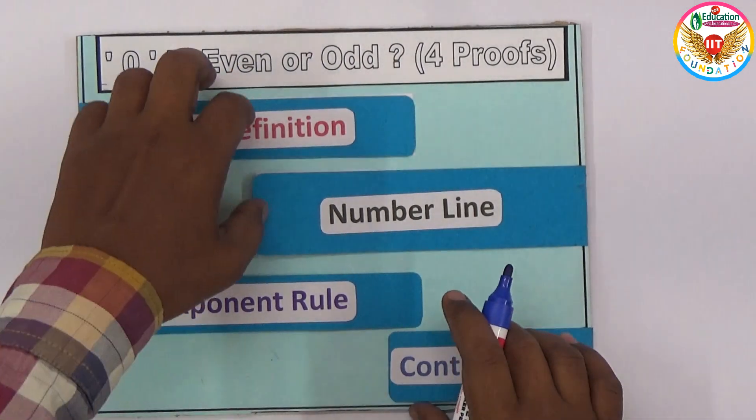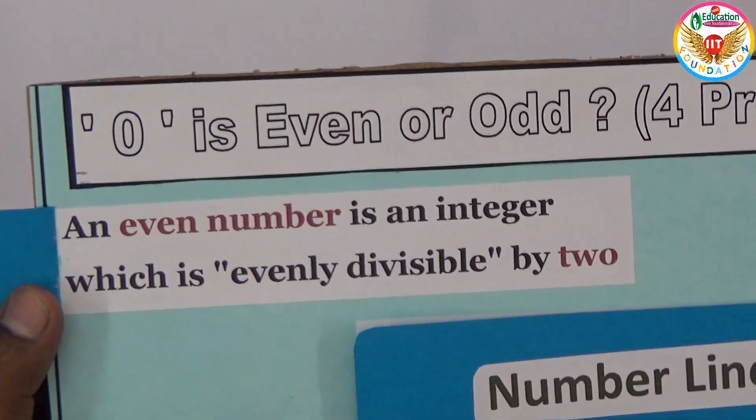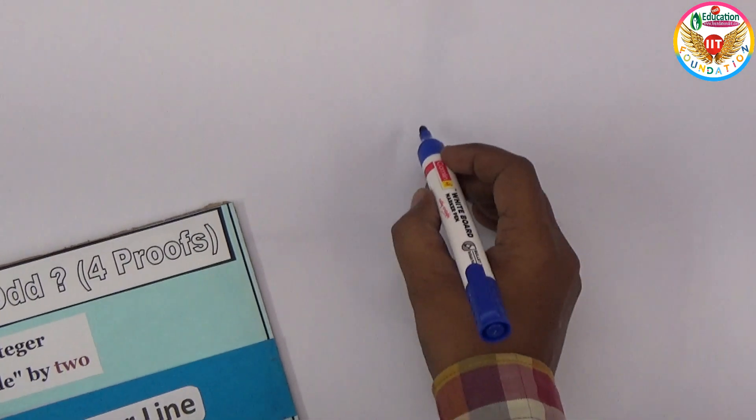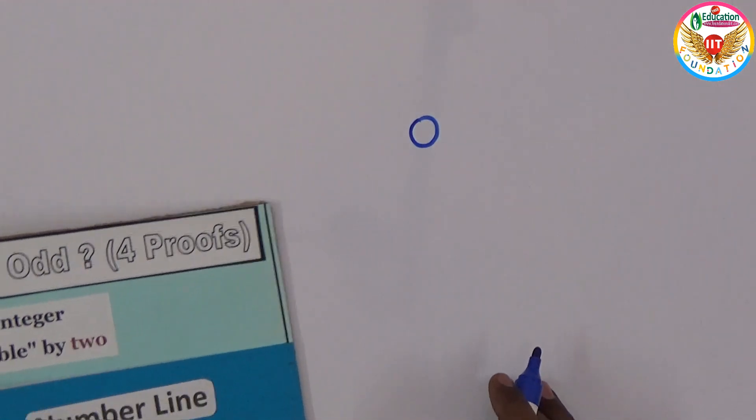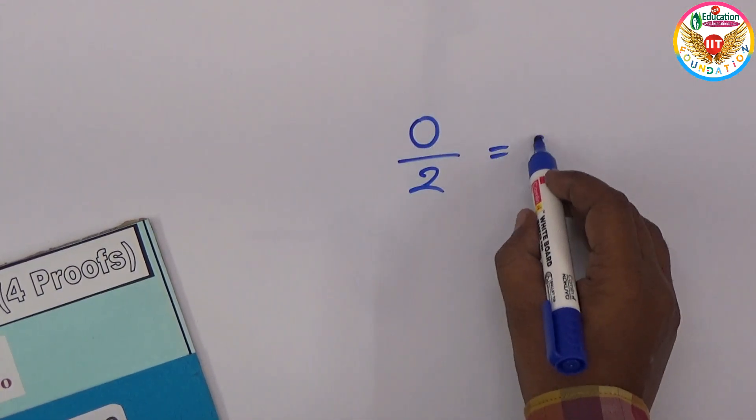First is the even definition. What does the even definition say? An even number is an integer which is evenly divisible by two. That means, for example, to test whether zero is even or not, you should divide by two. If you divide by two, you should get a remainder of zero.